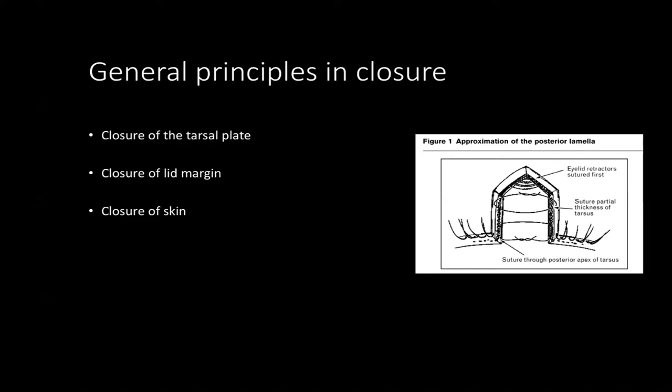When looking at a through-and-through defect, the eyelid retractors are sutured first, then you move on to the tarsal plate. The tarsal plate can be sutured with Vicryl stitches, but they should not be through-and-through bites because you don't want the suture to go through the conjunctiva and abrade the cornea. There should be no exposed suture abrading on the cornea.